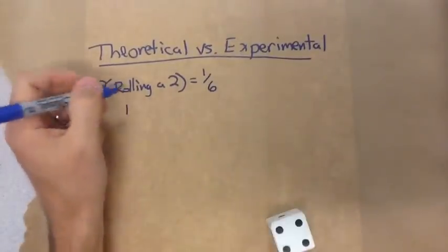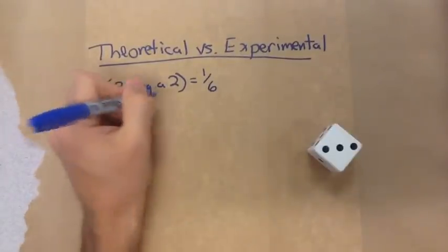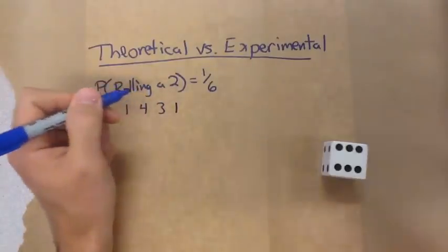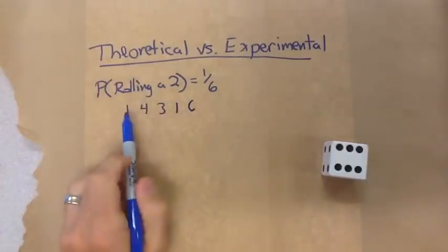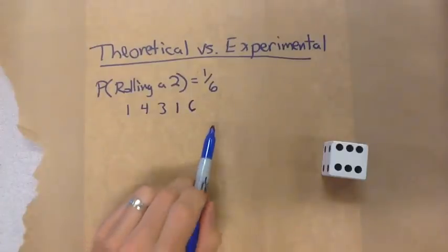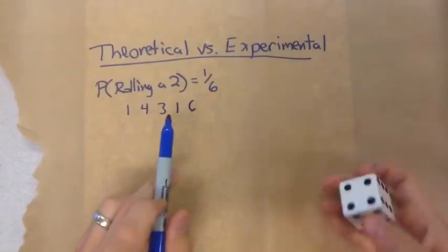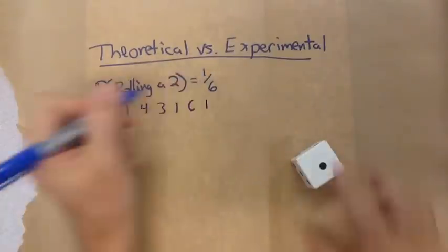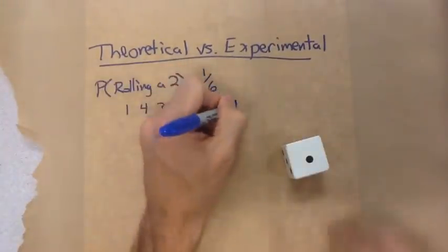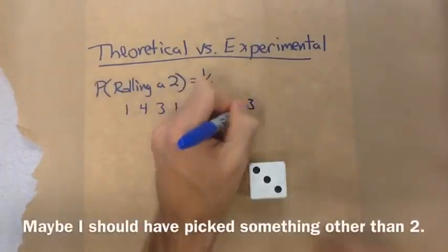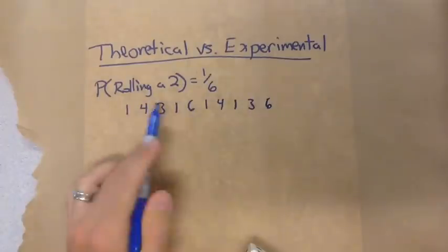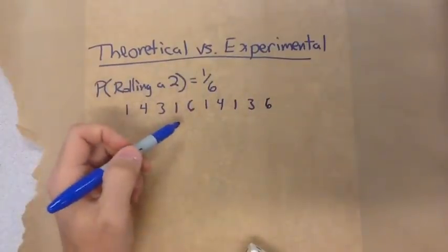I roll a one. I've rolled five times so far, and if that probability fits, maybe I should have a two on my next roll. I got another one, then a four. Now with ten different rolls, I've actually had zero twos occur.